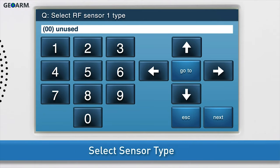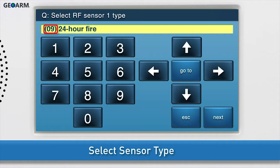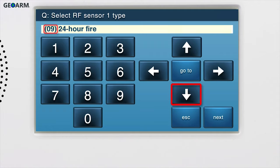Select the sensor type. There are two ways to change the sensor type. Option 1: Press the right arrow until 24-hour fire displays on screen. Option 2: Use the on-screen keypad to type 0, 9, which is the two-digit code for the 24-hour fire sensor type. Press the down arrow to go to the next sub-question.